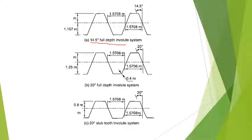Coming to the 20 degree involute system, it is also composed of straight sides. Here, interference takes place when the number of teeth on the pinion becomes less than 18.